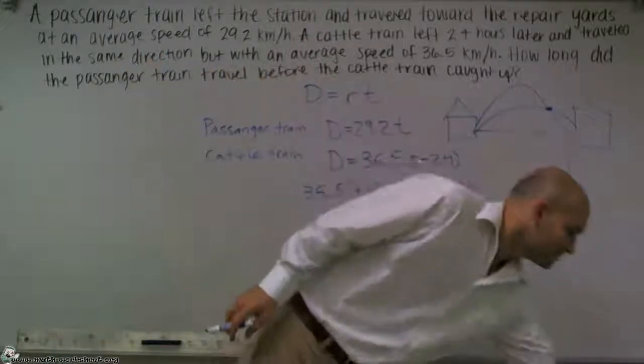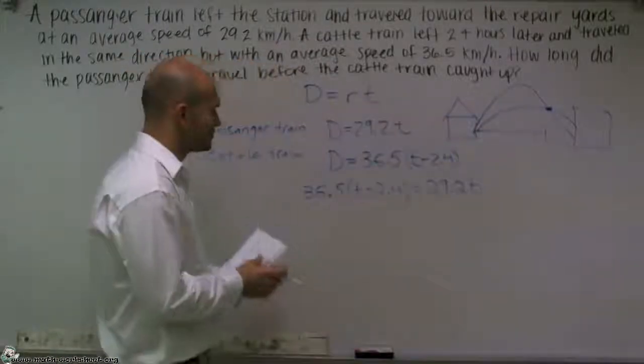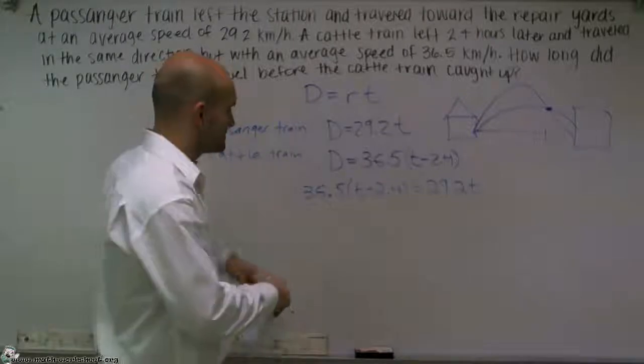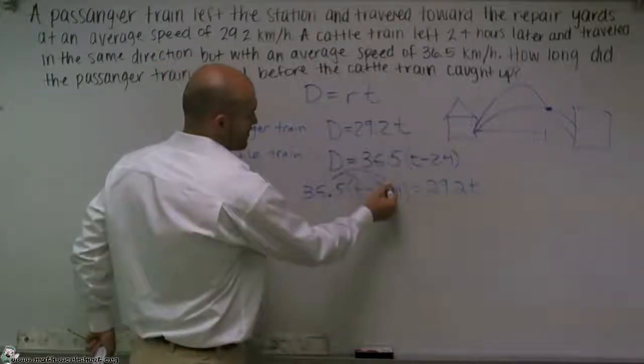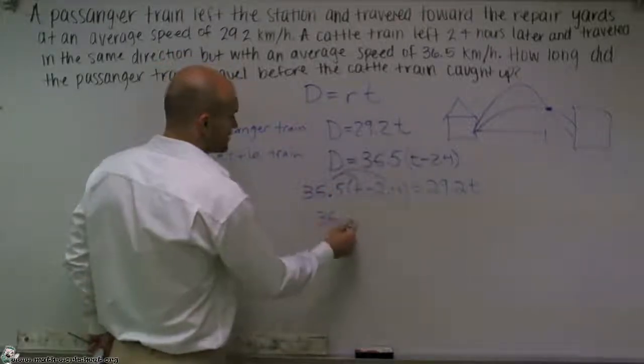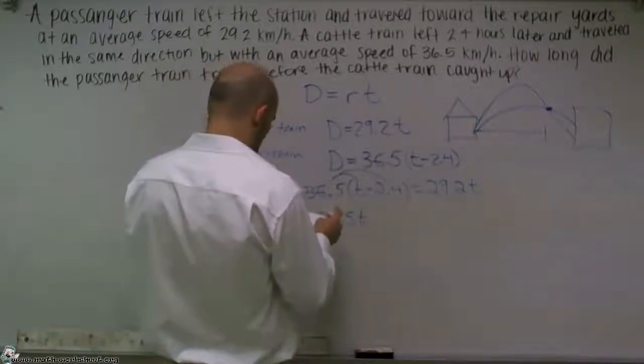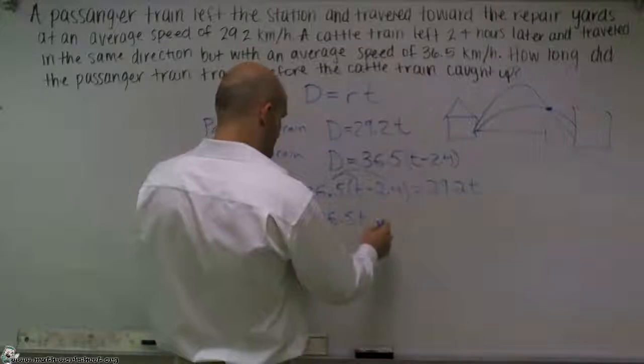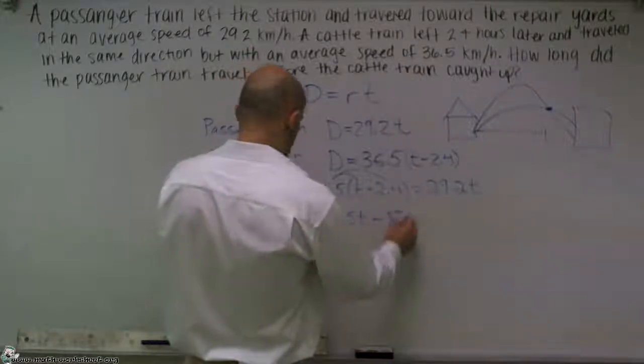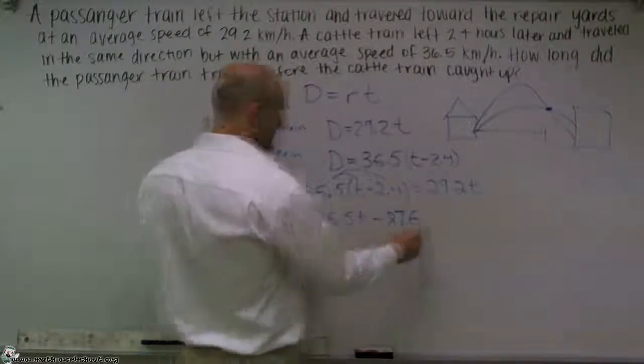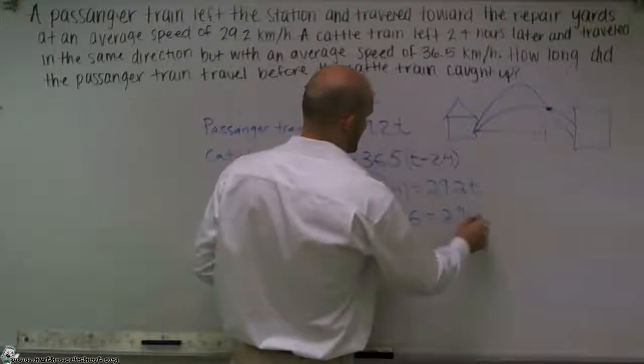So what I'm going to do now is just do a little algebra and set this up. So if I use my distributive property, I get 36.5T minus 87.6 equals 29.2T.